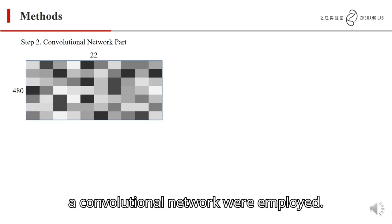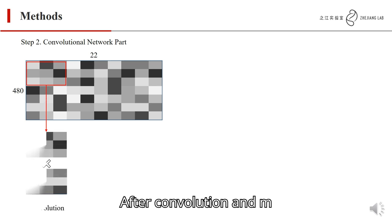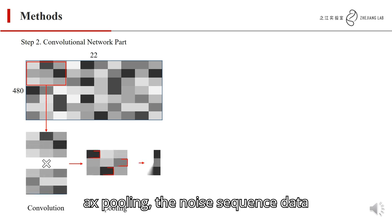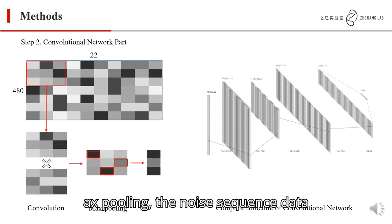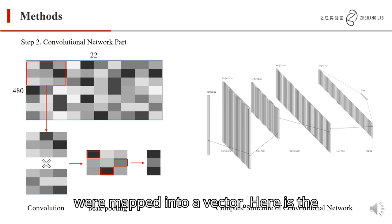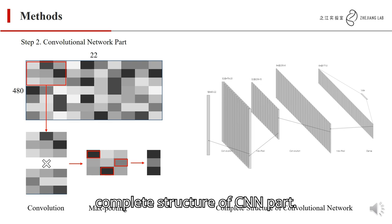Then, a convolutional network was exploited. After convolution and max pooling, the noise sequence data were mapped into a vector. Here is the complete structure of the CNN part.